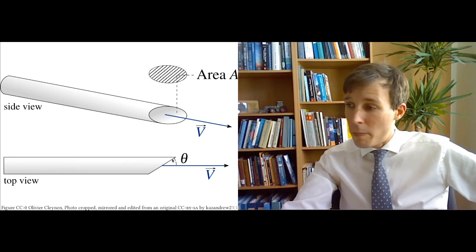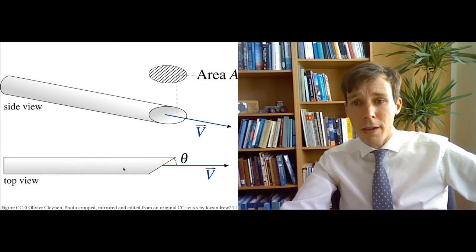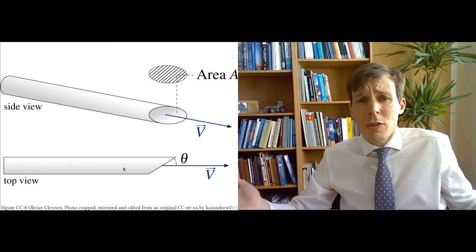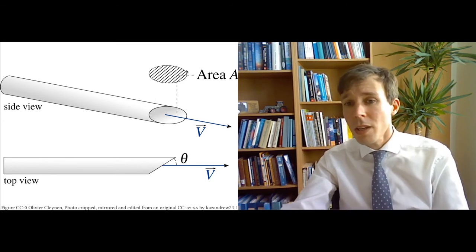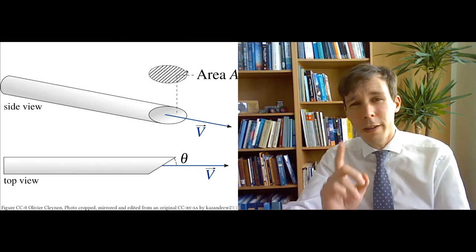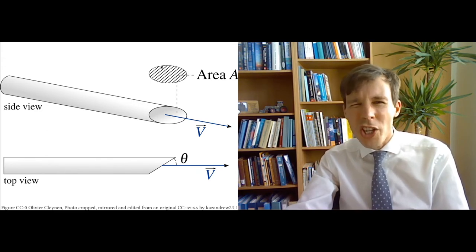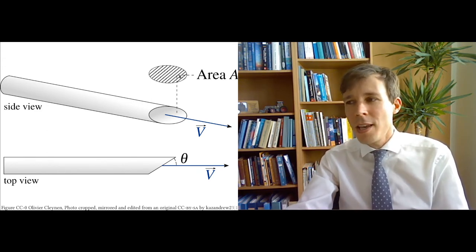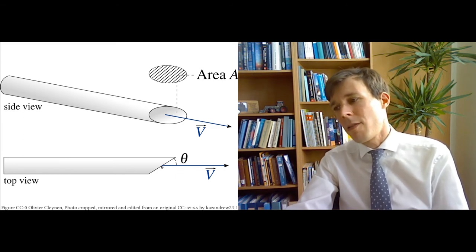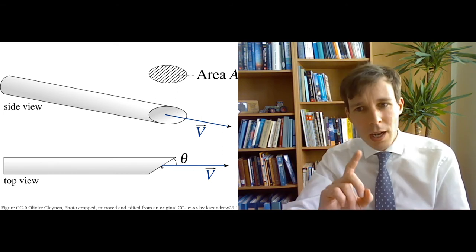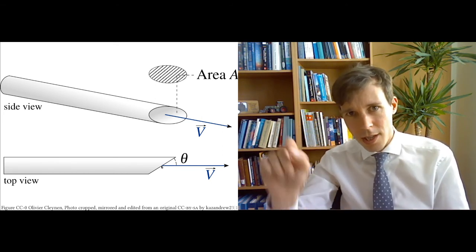When you cut the pipe and you vary this angle theta, you will do not affect the flow mechanics. It's just the look of the outlet and the quantified area A. So when we quantify the mass flow, we have to be very careful about which area exactly we're talking about and check that the velocity here, what the angle between the velocity and the area is. So this is how to calculate mass flow in such a case.